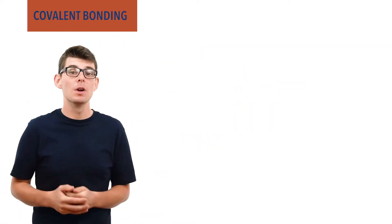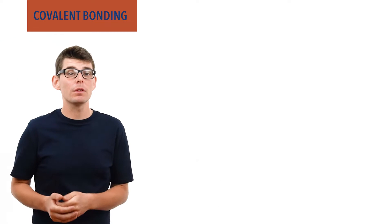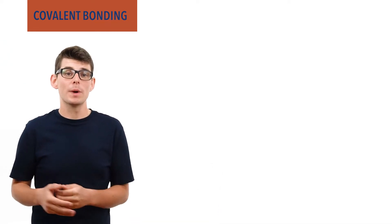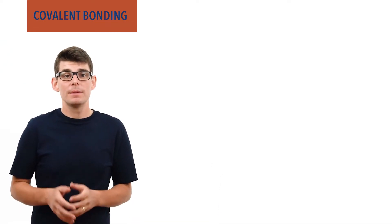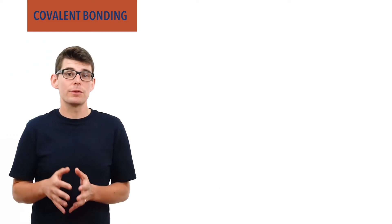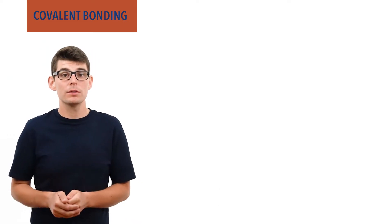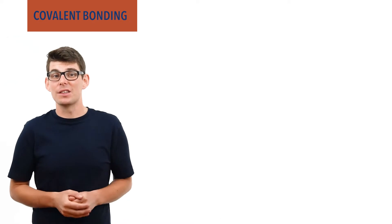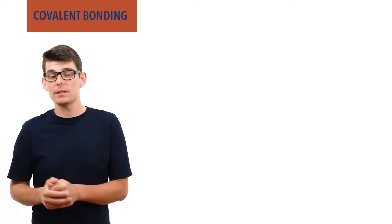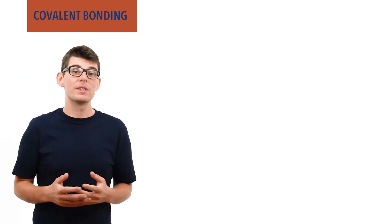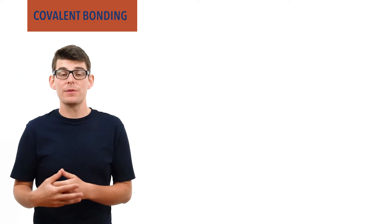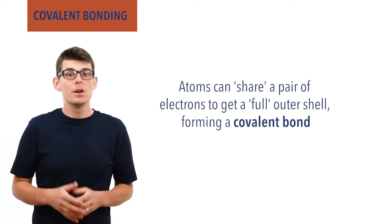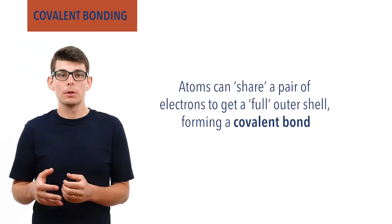Atoms are more stable when they have a full outer shell of electrons, and they can achieve this in one of two ways. They can either lose or gain electrons to form charged ions, leading to ionic bonding, or they can share electrons with other atoms, forming what we call covalent bonds.